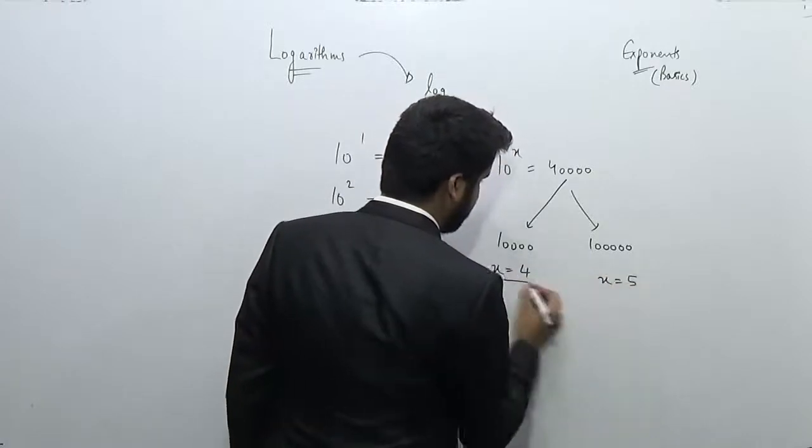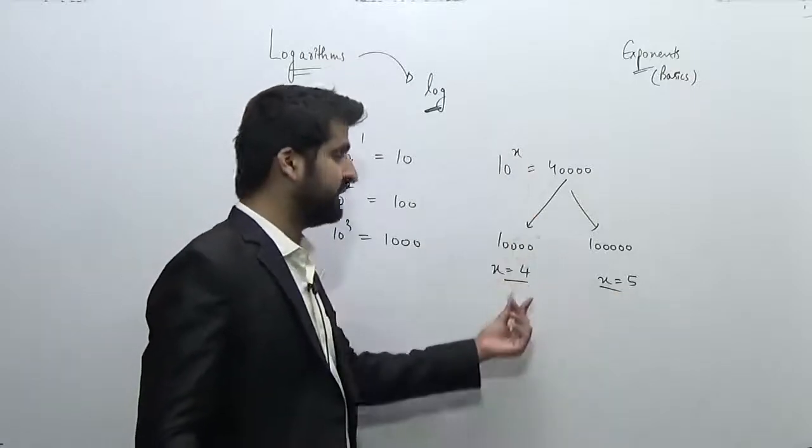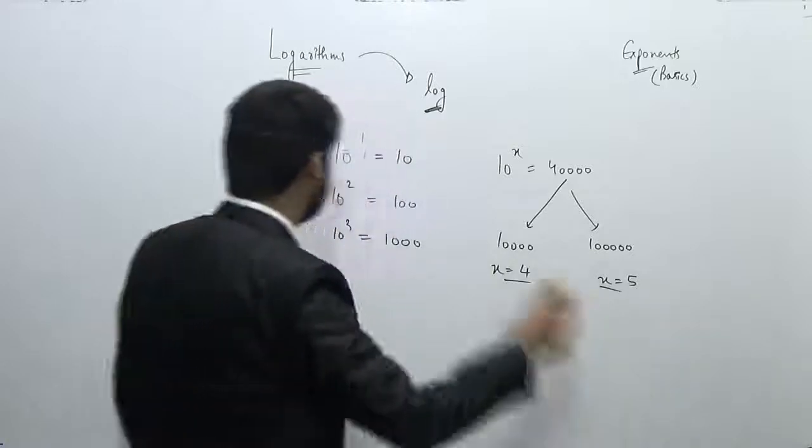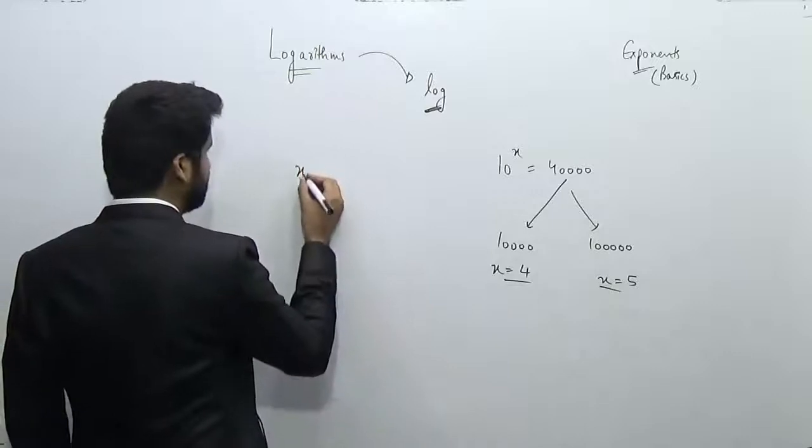So the exponent of 10, or the value of x, will lie between x equals 4 to x equals 5. Now I know this thing for sure, that the value of x will lie between 4 and 5.